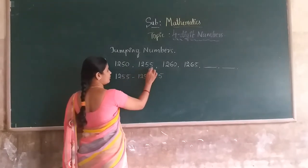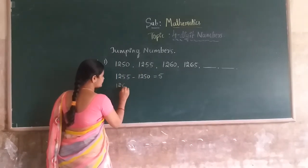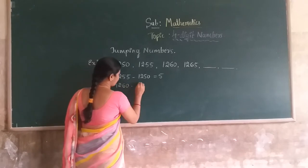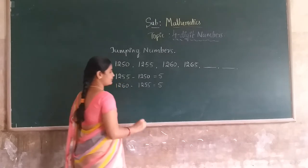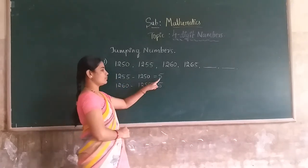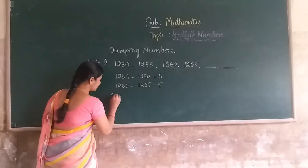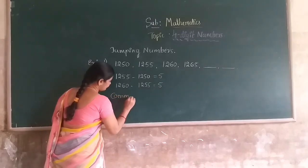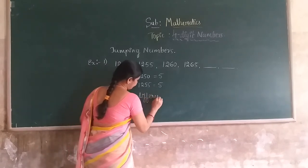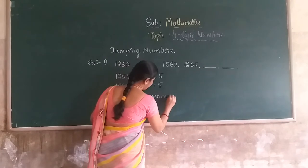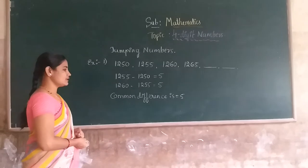Again, find out the common difference between the next two numbers: 1260 minus 1255. The common difference is also 5. Both pairs have the same common difference of 5. This is called the common difference.